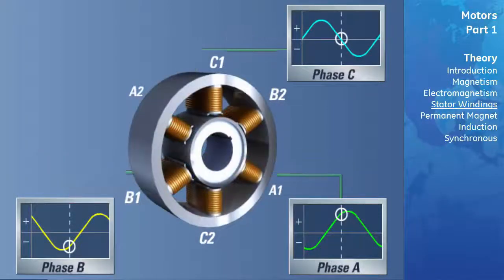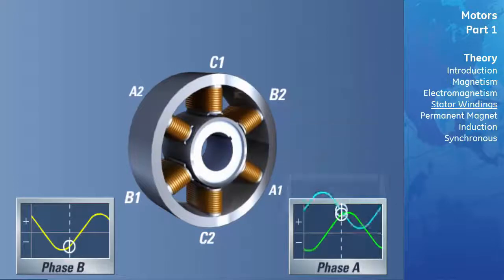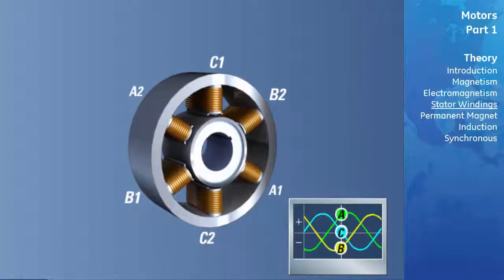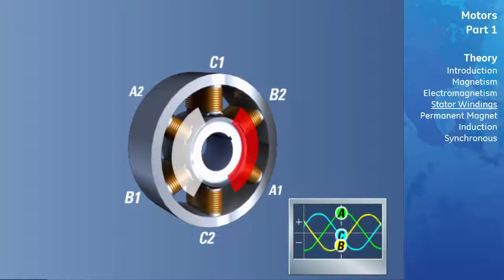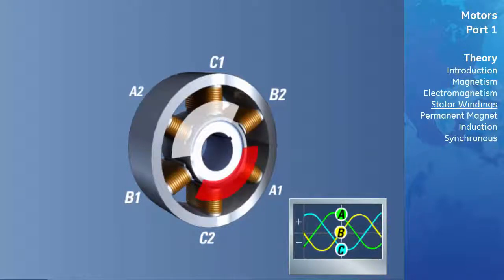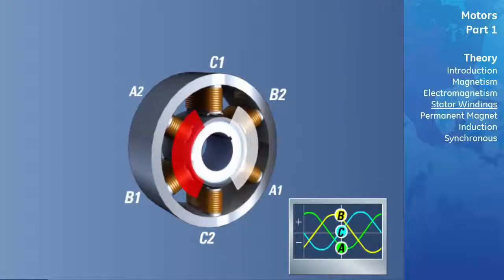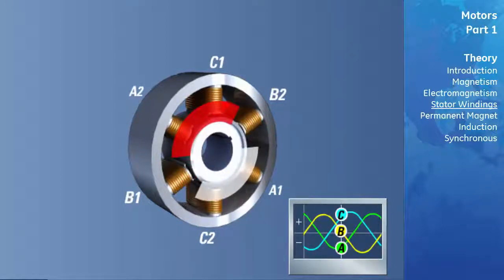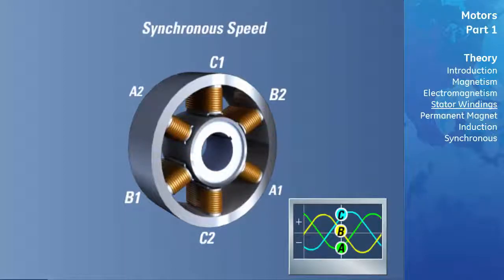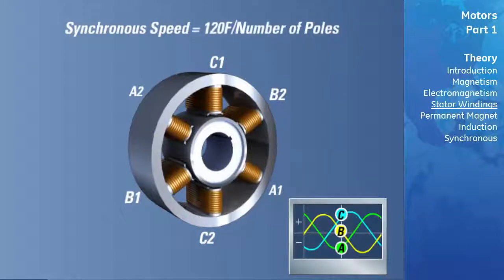If this evaluation is repeated every 60 degrees for the rest of phase A's cycle, we will see that the resultant stator field goes through one complete revolution, or 360 degrees. With a frequency of 60 hertz, this means in one second the field will go through 60 complete rotations, and in one minute, 3600 rotations. The speed of the rotating magnetic field is referred to as the synchronous speed. Synchronous speed can be calculated by the formula: synchronous speed equals 120 times the applied frequency, divided by the number of poles. Applying this equation to a four-pole motor, the synchronous speed is 1800 RPM.